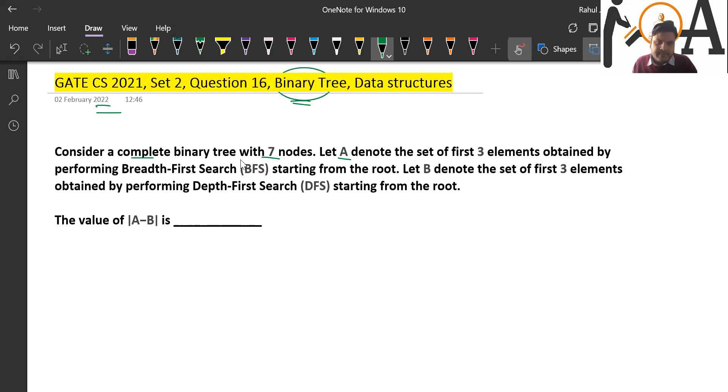The question is: consider a complete binary tree with 7 nodes. Let A denote the set of first 3 elements obtained by performing breadth-first search (BFS) starting from the root.